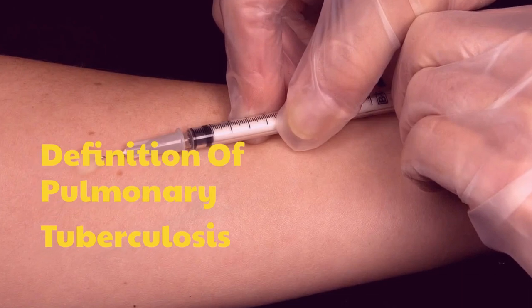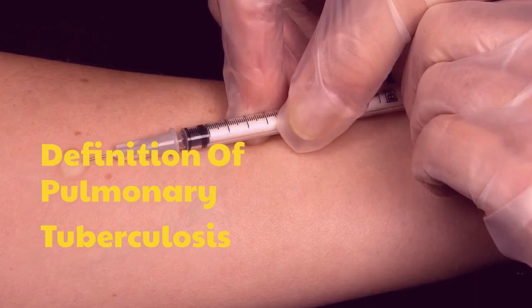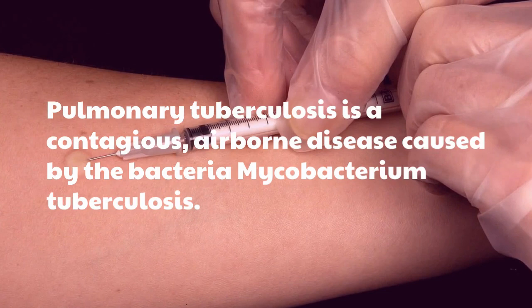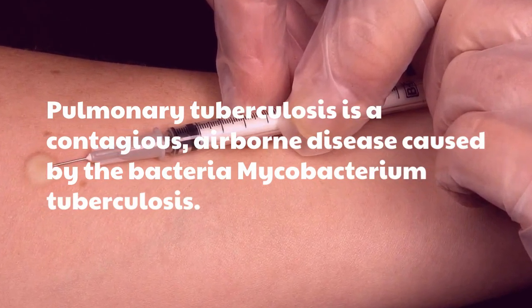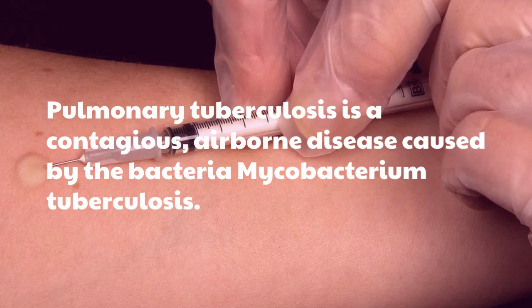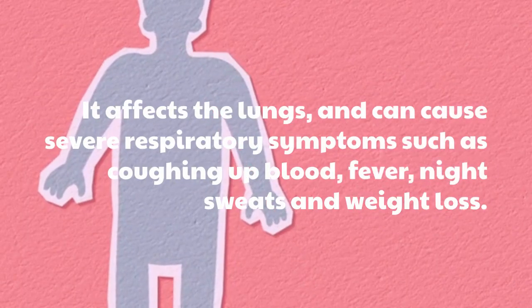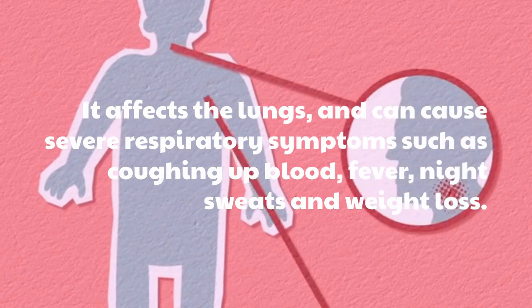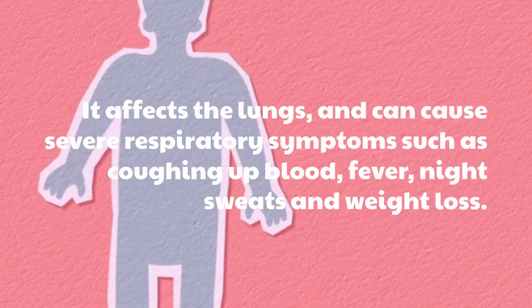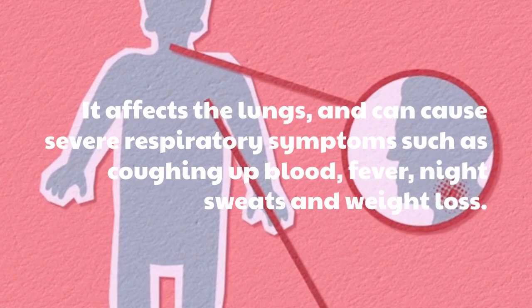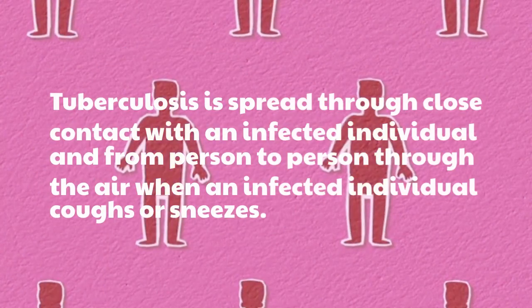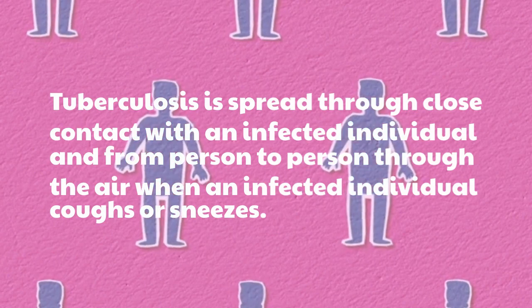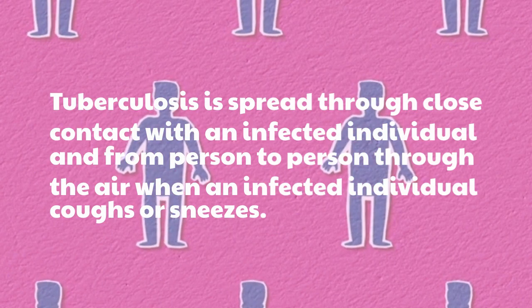Definition of Pulmonary Tuberculosis: Pulmonary tuberculosis is a contagious, airborne disease caused by the bacteria Mycobacterium tuberculosis. It affects the lungs and can cause severe respiratory symptoms such as coughing up blood, fever, night sweats and weight loss. Tuberculosis is spread through close contact with an infected individual and from person to person through the air when an infected individual coughs or sneezes.